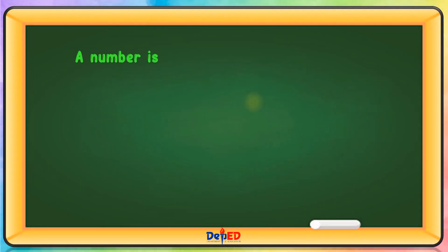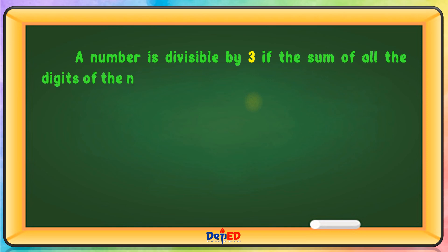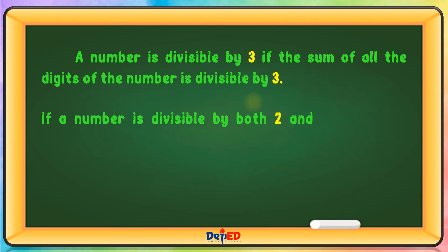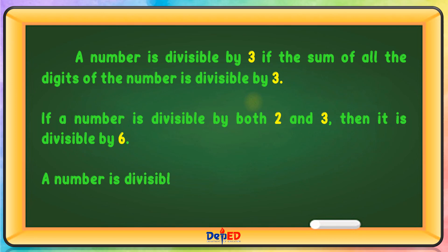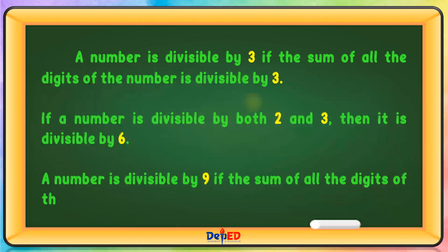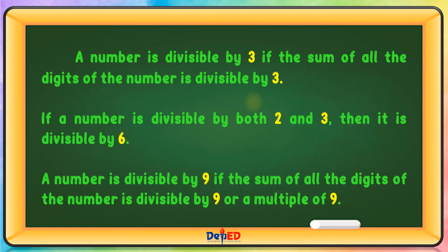A number is divisible by 3 if the sum of all the digits of the number is divisible by 3. If a number is divisible by 2 and 3, then it is divisible by 6. A number is divisible by 9 if the sum of all digits is divisible by 9 or a multiple of 9.